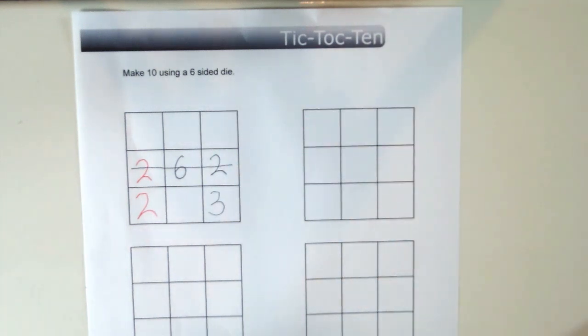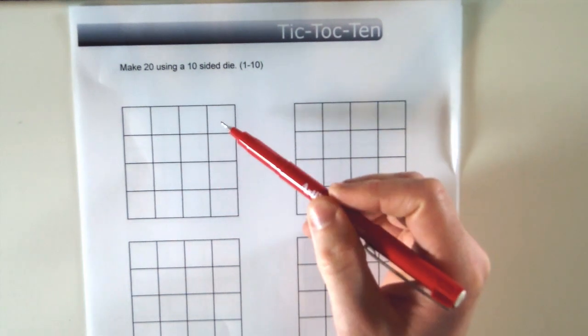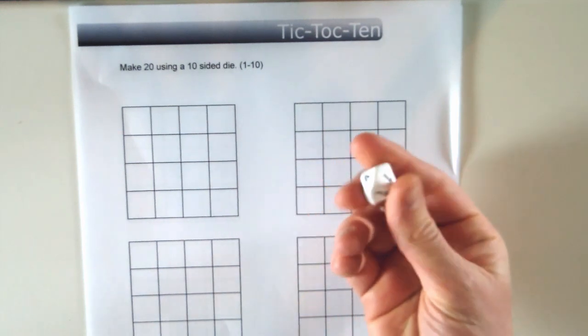Now if you want to play to 20, you use this one where you've got a grid of 4 by 4. And instead of using a die that's 1 to 6, use the die that is 1 to 10 like this.